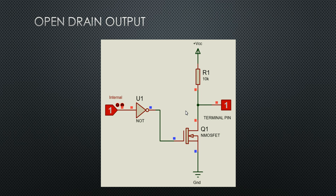Open drain configuration is most widely used in communication protocols like I2C. We do not use open drain in normal GPIO inputs and outputs — push-pull mode is the most widely used. I hope you understood the working functionality of GPIO pins and the variants available. See you in the next lecture. Thanks for watching.